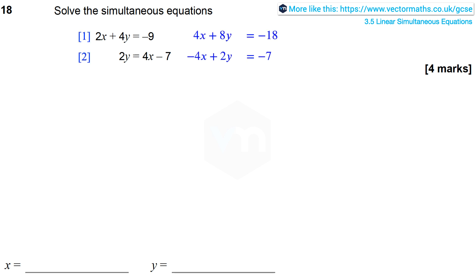I've decided to multiply the first equation by 2 to get 4x plus 8y equals minus 18. And I've actually rearranged equation 2 into the form minus 4x plus 2y equals minus 7.